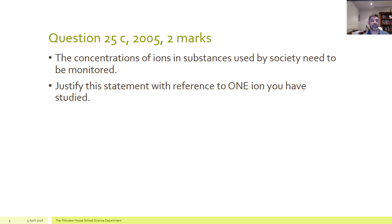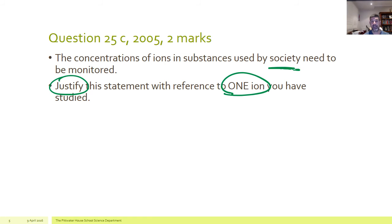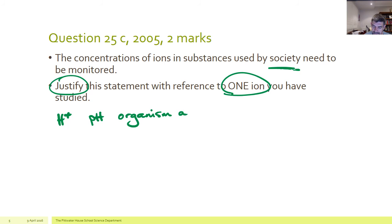So here's a question from 2005 — part of a bigger question. We're told that the concentration of ions in substances used by society needs to be monitored, which targets you into this area. You need to justify — giving reasons for — this statement in reference to one ion that you have studied. This is a very open question. You could talk about hydrogen ions and the fact that they affect the pH of water, which in turn affects the activity of organisms. It can also affect the ability of certain substances to dissolve, among a range of other things.